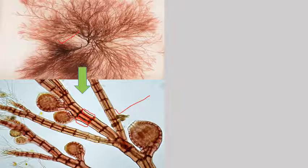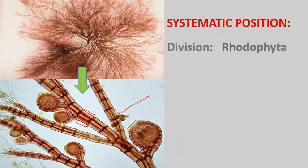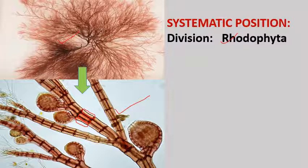If we talk about its systematic position, it belongs to division Rhodophyta, which contains red algae. Regarding characteristic features: mostly red algae live in deep seas up to a depth of 30 to 90 meters — this is a saltwater, mostly marine habitat. But there are some exceptions; some red algae also live in freshwater. Examples include Batrachospermum and Compsopogon — these two genera live in freshwater habitat.